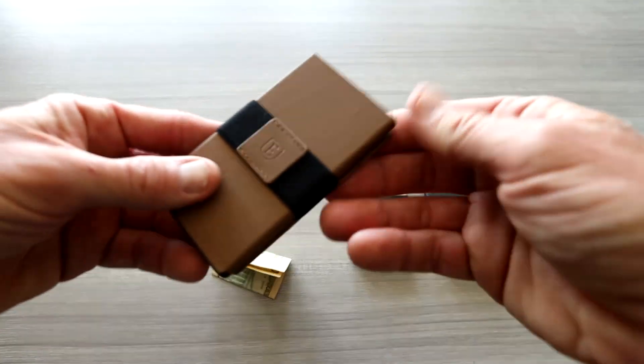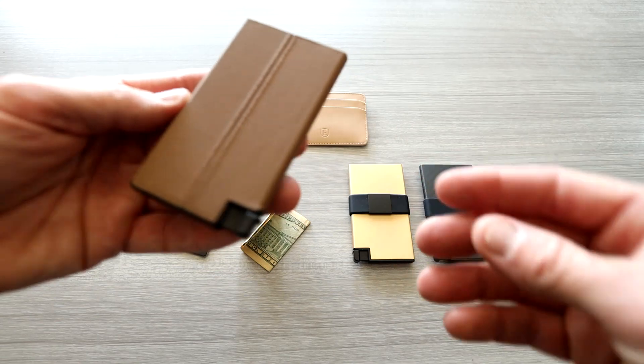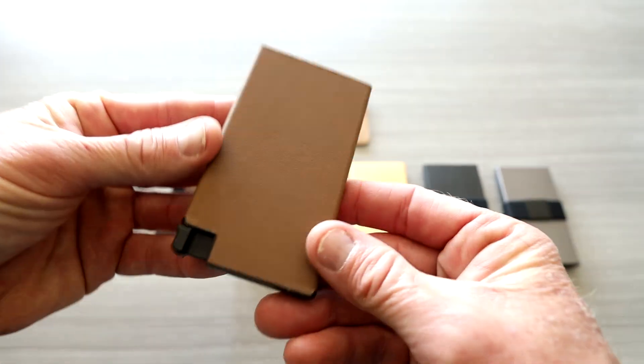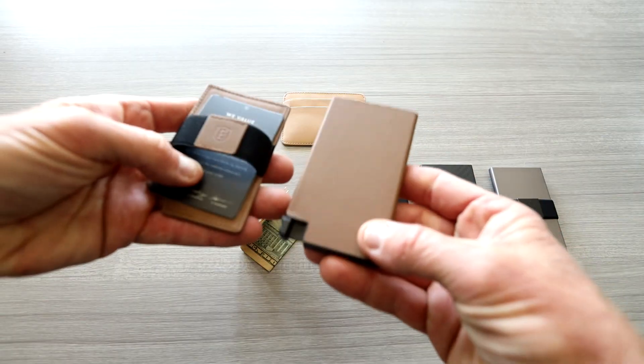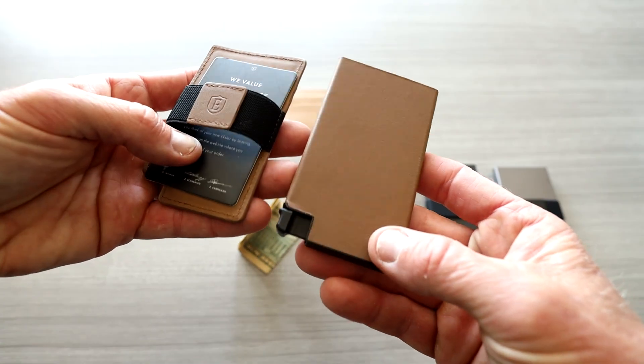You have your cash strap right here on the front. Now let's say you want to go super minimalistic. Well, that portion detaches from the Senate, and then you have just this if you want to go super minimalistic. I'll leave that up to you. And that color is the Senate in the Roma Cognac color.